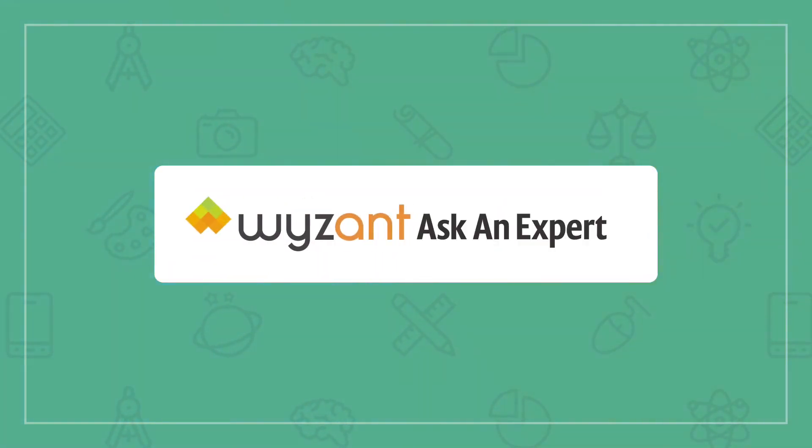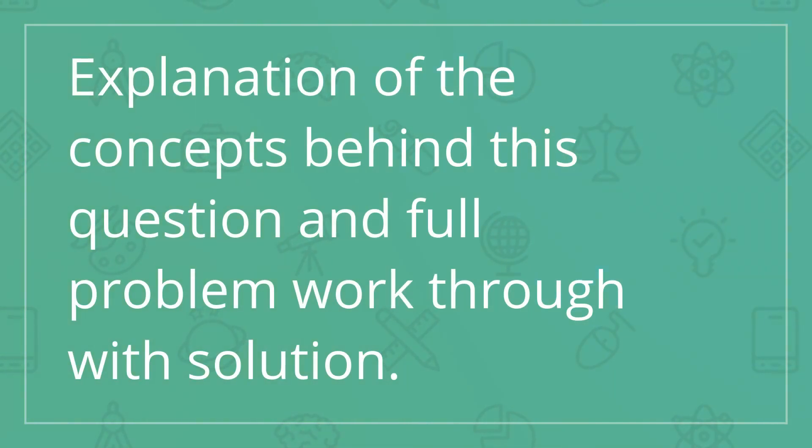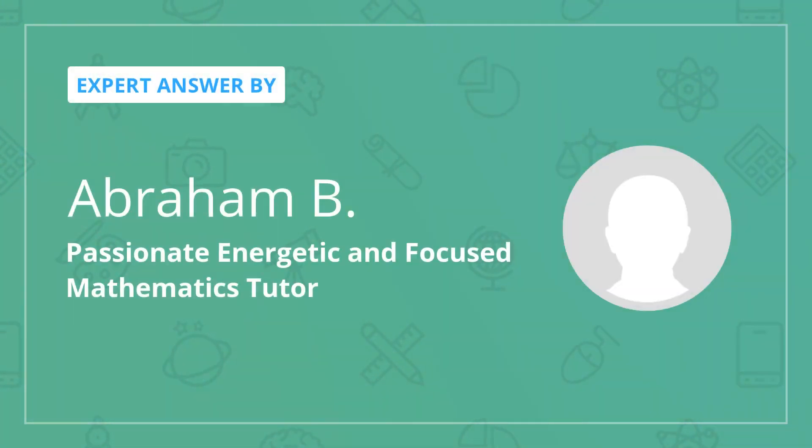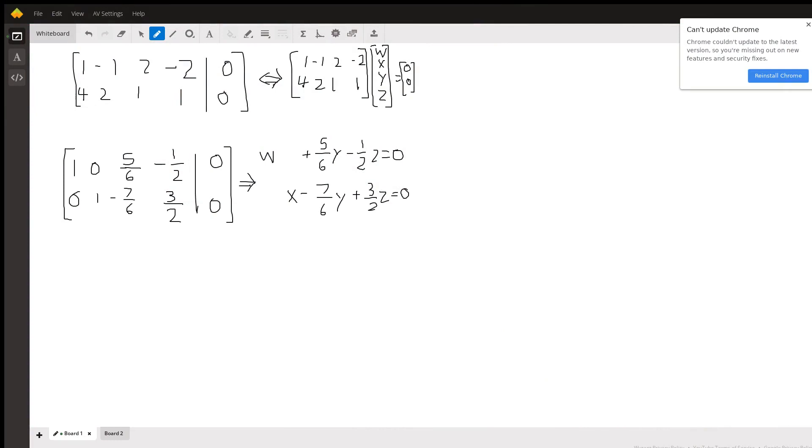Alright Nathan L, your question. The question says find a set of vectors u, v in R^4 that spans the solution set of the equations w - x + 2y - 2z = 0 and 4w + 2x + y + z = 0.